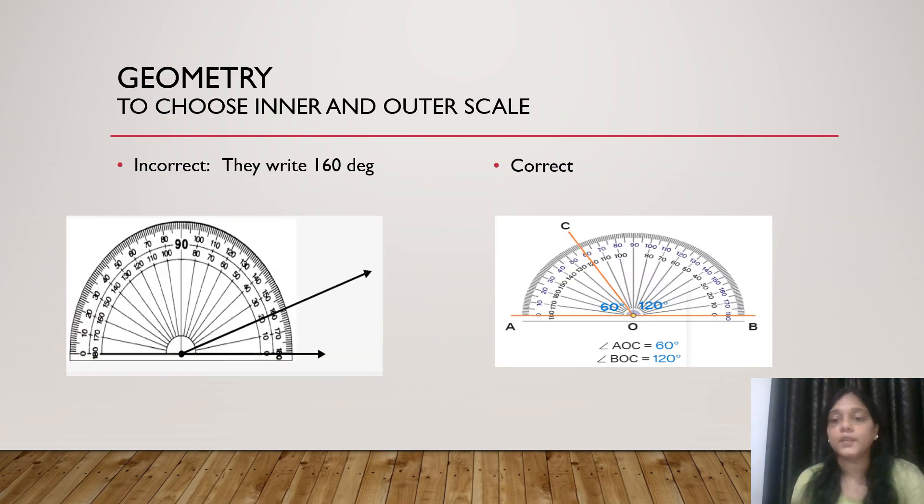Our next topic is geometry. The common mistake is to choose inner and outer scale while measuring the angle. They can avoid this mistake by first observing the angle and deciding what kind of angle it is. Obtuse or acute. In correct figure we have an acute angle. But in place of writing 20 degree they write 160 degree which is incorrect. Secondly they always use the scale where the baseline arm point to 0. Baseline point to 0 in the inner scale. So we use inner scale to measure the angle. For example here AOC will be 60 degree and angle BOC or COB will be 120 degree.